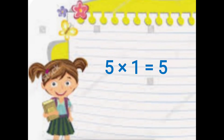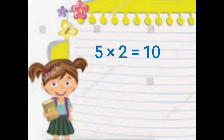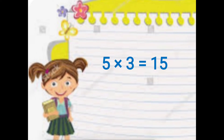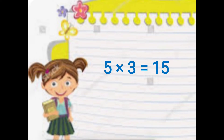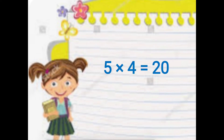5 ones are 5. 5 twos are 10. 5 threes are 15. 5 fours are 20.